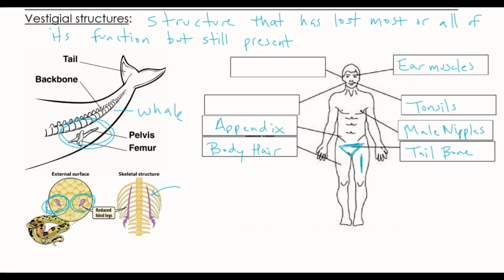Another one is your appendix. People get appendixes removed all the time; we're not really sure of its function — it doesn't really do anything for us. And then you also have wisdom teeth, which are actually a great evolutionary example. When we used to live in more wild times, some of your teeth would fall out, so your wisdom teeth are just extra teeth that would grow in the back and shove all your other teeth over to fill in those gaps, so you could still have a fully working jaw.